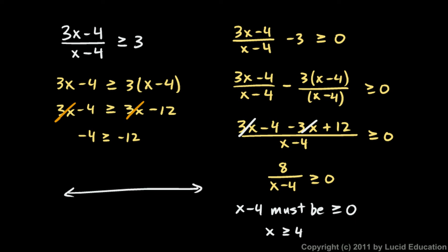So my solution looks like this at 4. And I plot all the numbers to the right but not including 4. And I would write my answer like this: x is greater than 4.